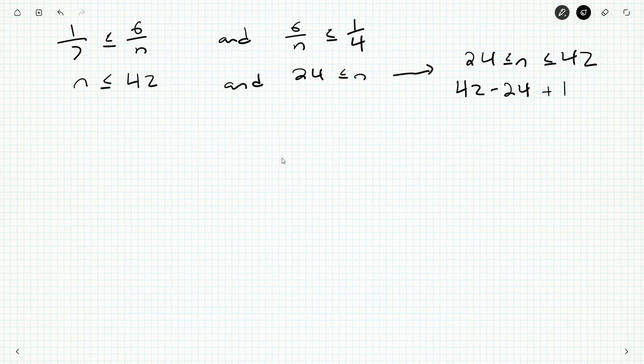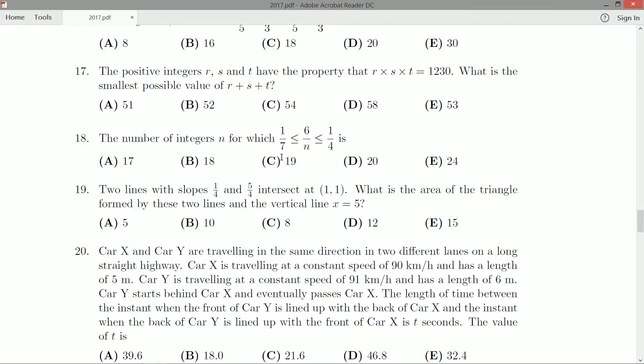So 42 minus 24, if you need to grab your calculator, if you do it in your head that's great too, and it's going to be 19. All right, so that gives us C, 19.